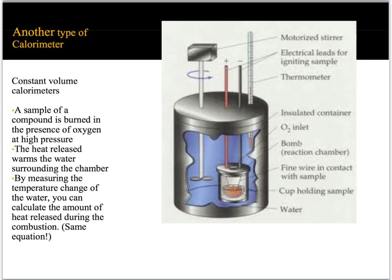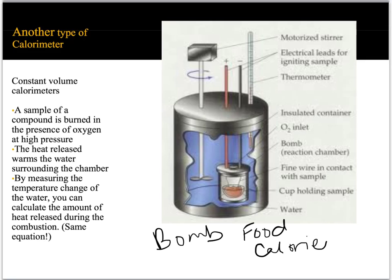Here's another type of calorimeter called a constant volume or bomb calorimeter. In a bomb calorimeter, the reaction is done in the presence of oxygen under high pressure, and the heat released warms water in a chamber. You can use that to calculate how much heat energy was involved in the reaction. Bomb calorimeters would be used for food calorie determination.